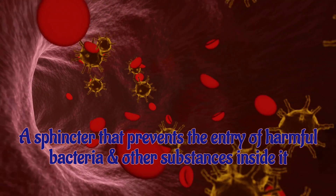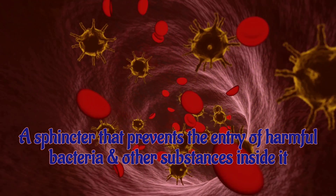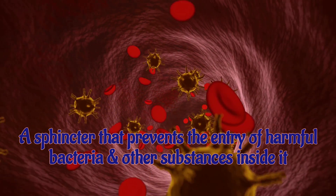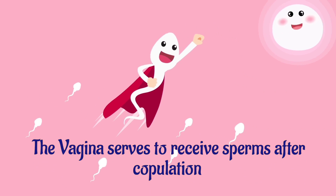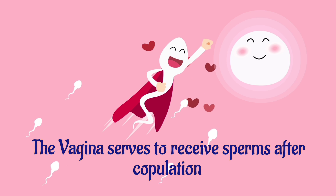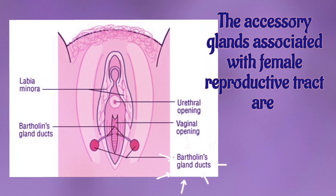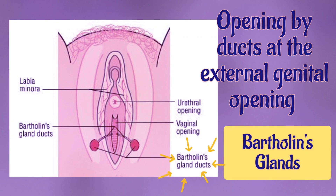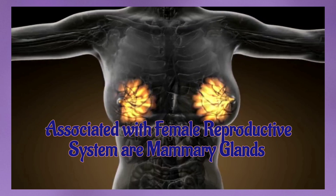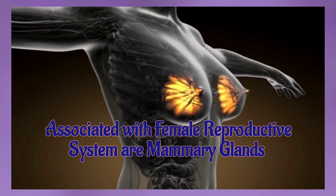The uterus opens into a long tube, the vagina, the opening being guarded by the cervix of the uterus — a sphincter that prevents the entry of harmful bacteria and other substances. The vagina serves to receive sperms after copulation. The accessory glands associated with the female reproductive tract are Bartholin's glands, opening by ducts at the external genital opening.